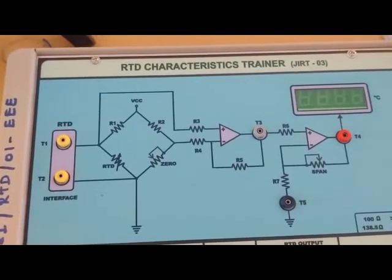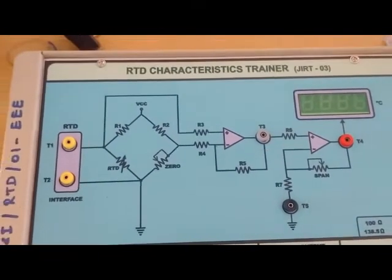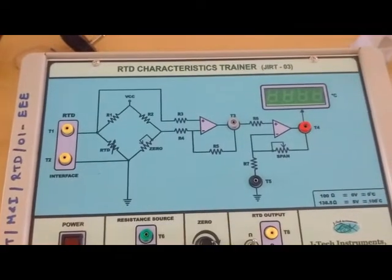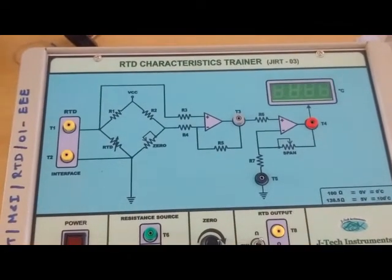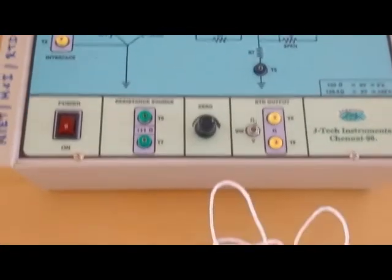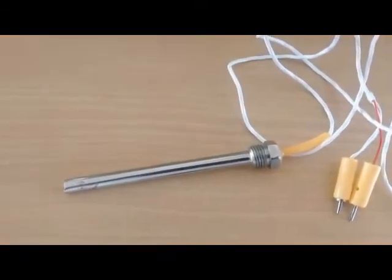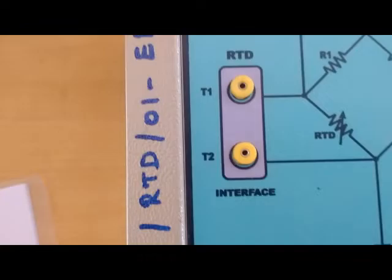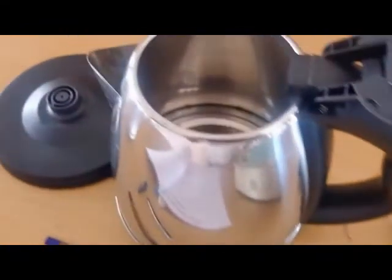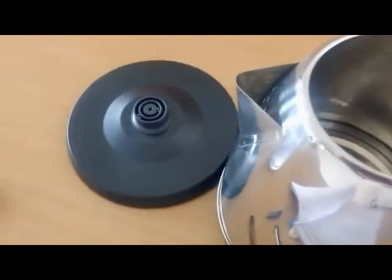We are going to measure the temperature using RTD, and we can see the RTD characteristic trainer kit here. This is the RTD sensor to interface in T1 and T2, and this is the kettle to boil the water.